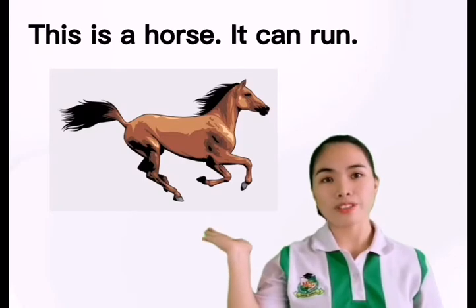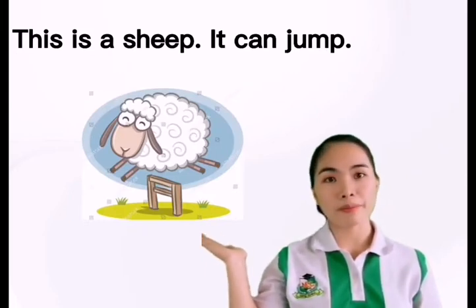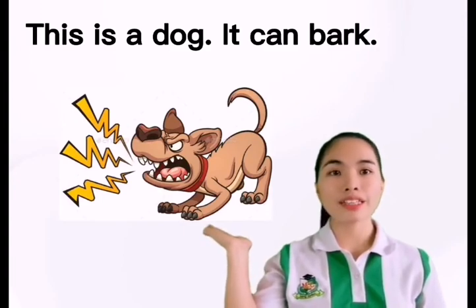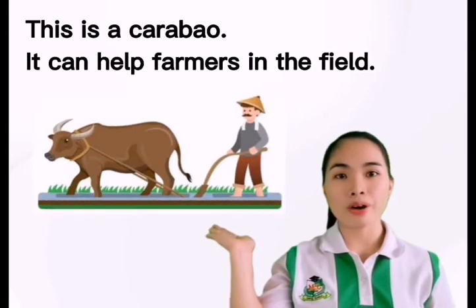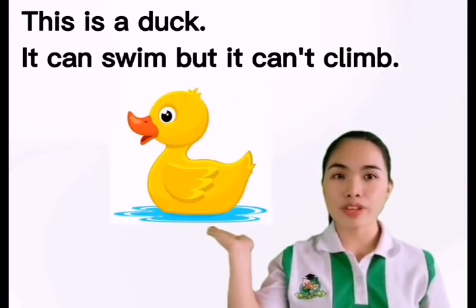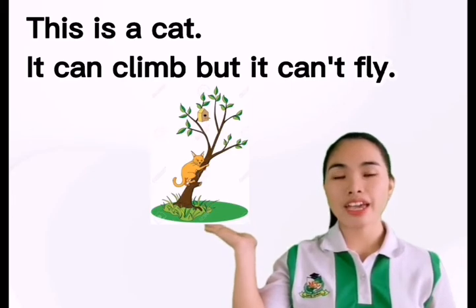Let's proceed to the farm animals and learn about their abilities. Number one, this is a horse — it can run. This is a sheep — it can jump. This is a dog — it can bark. This is a caravan — it can help the farmer in the field. This is a duck — it can swim, but it can't climb. This is a cat — it can climb, but it can't fly. Those are examples of can and can't.